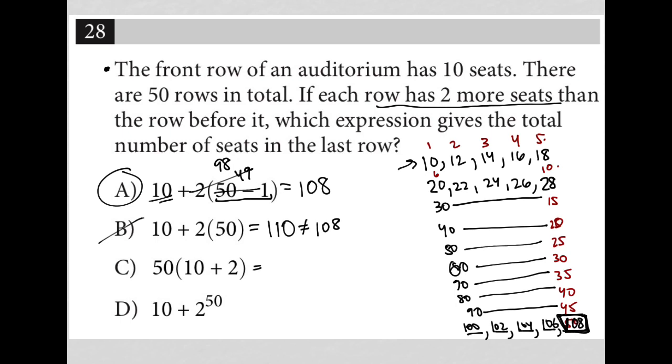Choice C would give me, looks like 600. So that's not 108. So that's gone. And choice D, right? Two to the 50th, two to the 50th power is just way too big. No need to even check that one out.